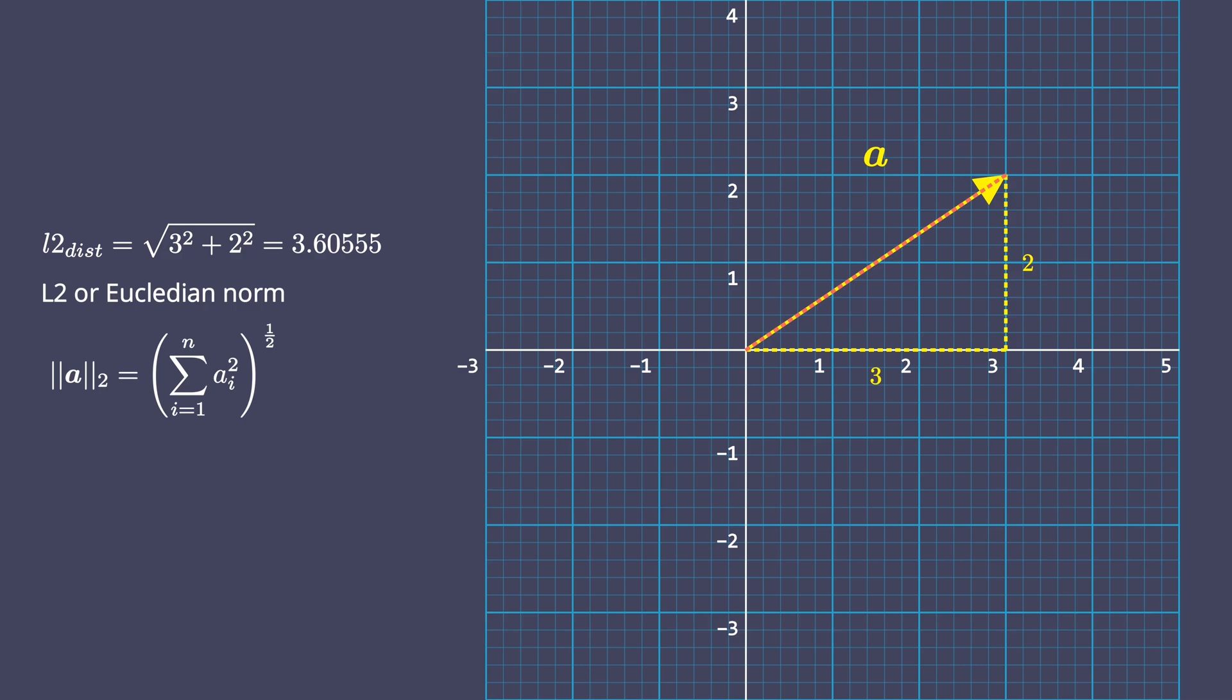By now, you must have realized that there can be infinite ways of calculating the magnitude of a vector. The magnitude of a vector is measured in terms of its norm. The P norm for P greater than equals 1 provides a generalized way of computing any norm of a vector and is represented by this equation.